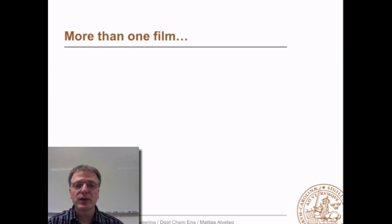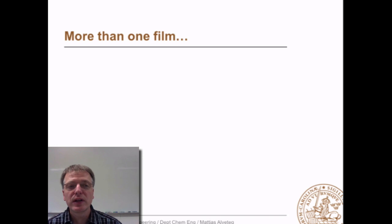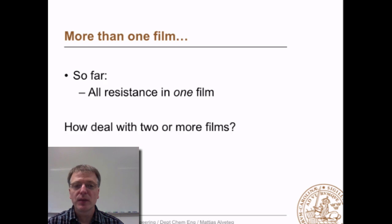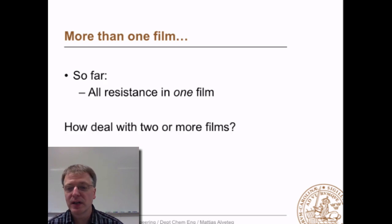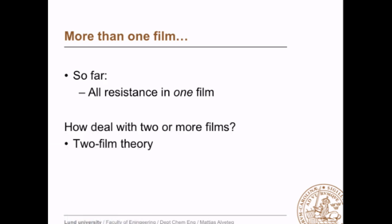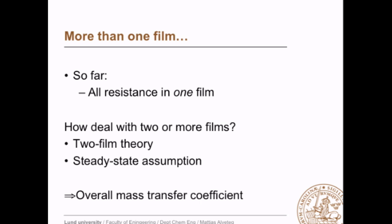When we've dealt with the two-film theory before, we've actually only done calculations where only one film limits the mass transport. So what happens if we have more than one film and if we use the two-film theory? Well, let's use the steady-state assumption. Then we can actually calculate an overall mass transfer coefficient.